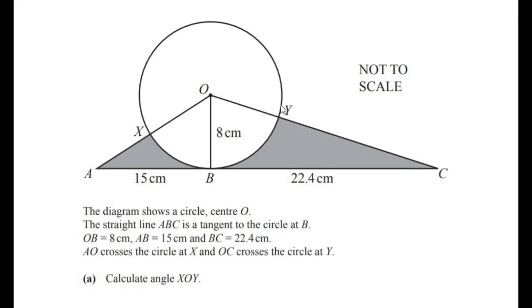Hello and welcome to my channel. In this video we are going to solve an example which is a combination of trigonometry and mensuration. This question is divided into three sub-questions. The diagram shows a circle with center O. The straight line ABC is a tangent to the circle at point B. OB is 8 centimeters, AB is 15 centimeters, and BC is 22.4 centimeters. AO crosses the circle at point X and OC crosses the circle at point Y. Calculate the angle XOY — that is the total angle we need to find out.